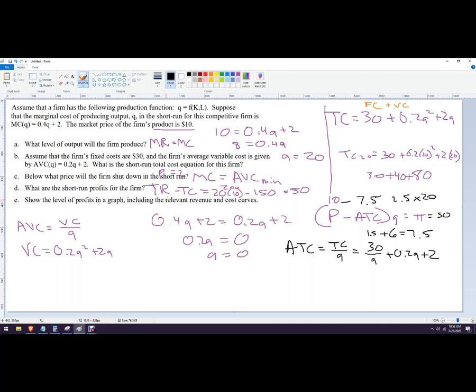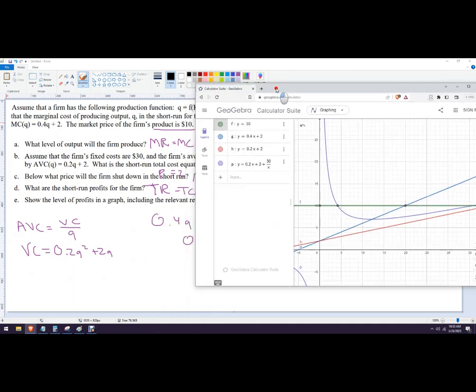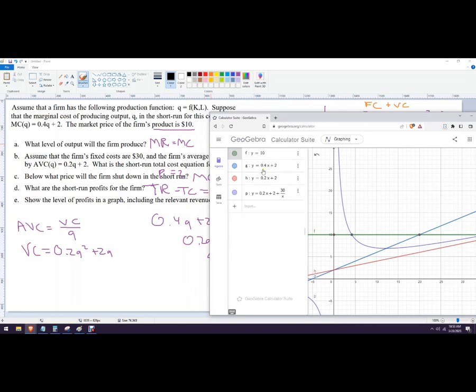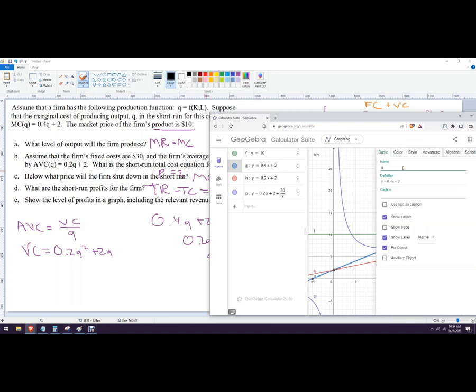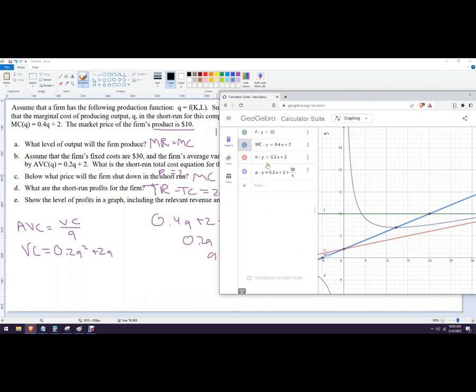Last, I want to show the level of profits in a graph using the relevant curves. I'm going to use GeoGebra. I've already done this with a couple of functions here. In economics, price is always on the Y axis. So I did Y equals 10, that's marginal revenue. Y equals 0.4X plus 2, so X is quantity, Y is price. That's marginal cost there. You could rename this MC if you want. This one is average variable costs, and then average total costs. I've graphed all of them.